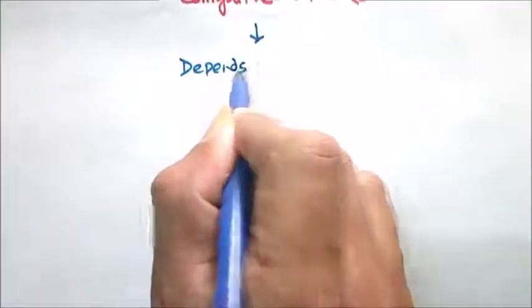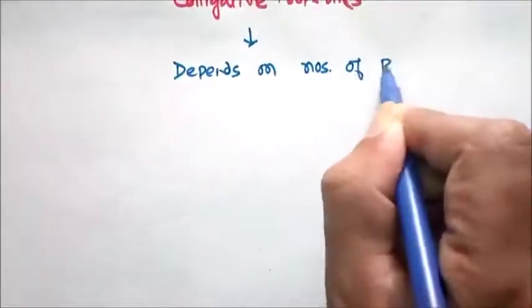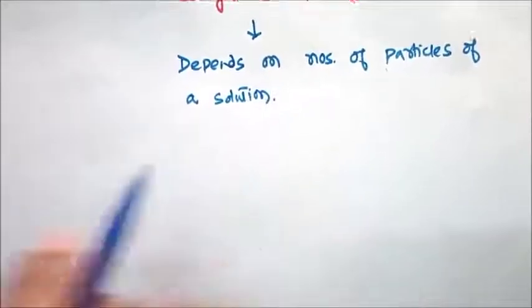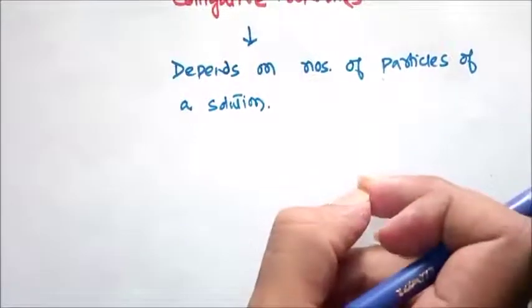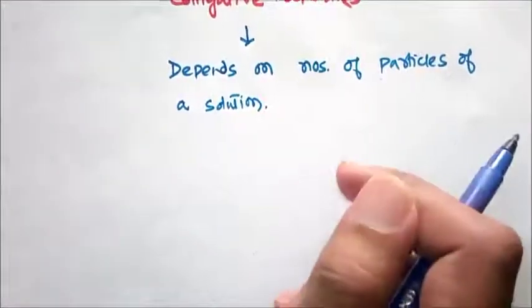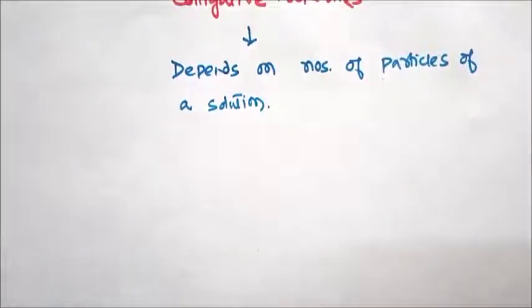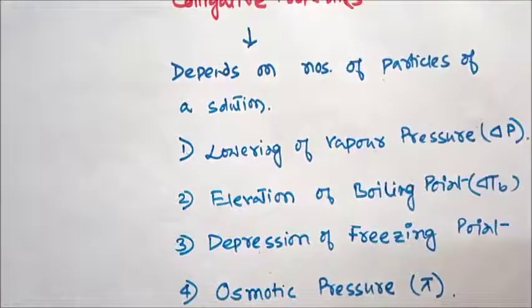So let us start with today's discussion. We will discuss about colligative properties. These are some properties of a solution that do not depend upon the nature of the solvent or solute — they just depend upon the number of particles of the solute. Colligative properties of a solution are those properties that depend upon the number of particles in the solution. There are four colligative properties.